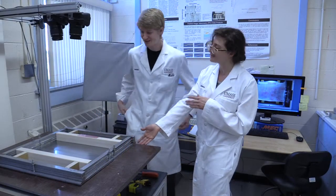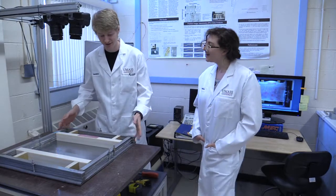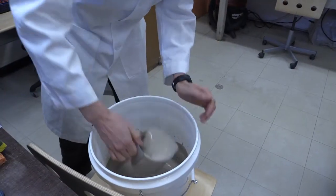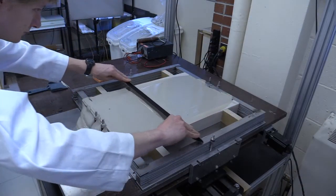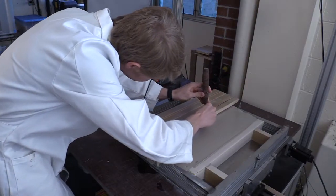Do you want to tell us quick what this is, what we're standing next to? This is our deformation box and so we grow our faults in this. We first pour the clay and we can either pre-cut faults or not, and then we can displace the box and that displacement can grow faults.